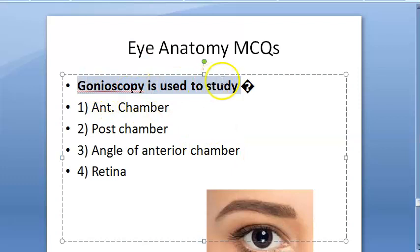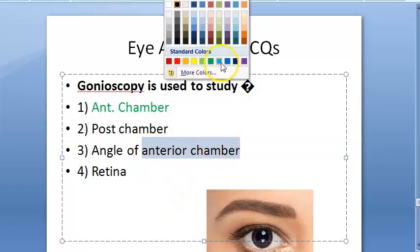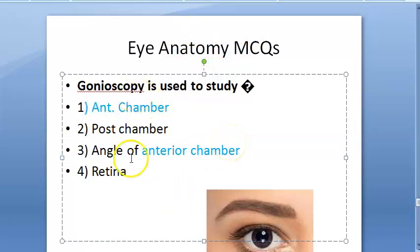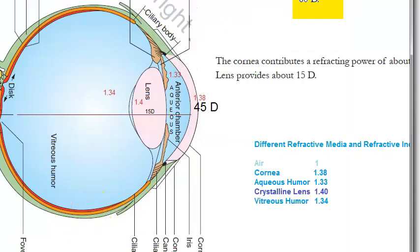Gonioscopy is used to study what? Anterior chamber, posterior chamber, angle of anterior chamber, or retina? The answer is angle of anterior chamber. The anterior chamber in front of the iris contains aqueous humor, and with gonioscopy they check the angle of the anterior chamber to assess drainage of the aqueous humor, particularly in conditions of glaucoma.